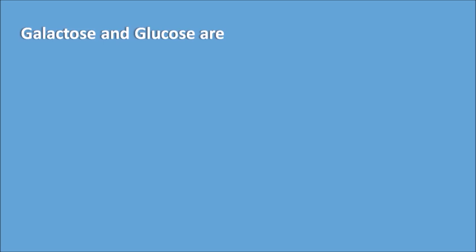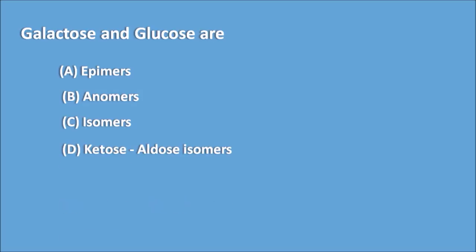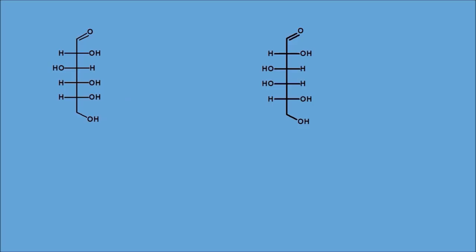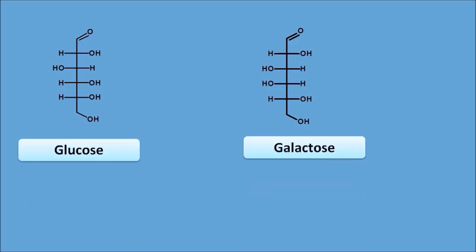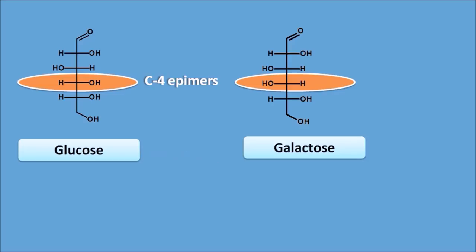The next question presents the structures of glucose and galactose, and the right answer is epimers. Observing the configuration at carbon-4: the OH group is on the right side in glucose and on the left side in galactose, while all other carbons have identical configuration. Structures that have equal configuration at all carbons except one are called epimers. Therefore glucose and galactose are C4 epimers.